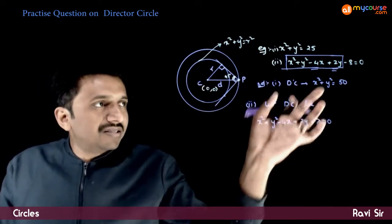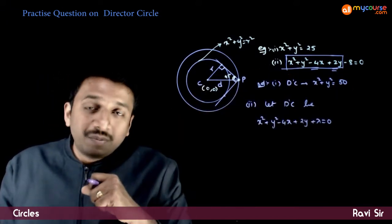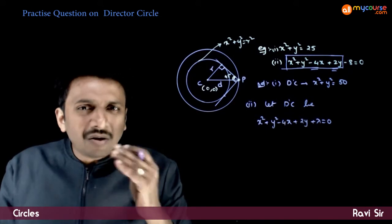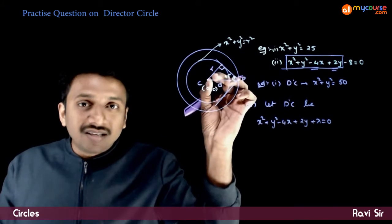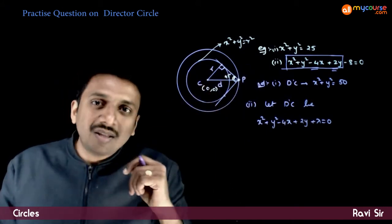So, this is any concentric circle to this circle. But I do not want any concentric circle. I want that particular concentric circle whose radius is root 2 times the original radius.